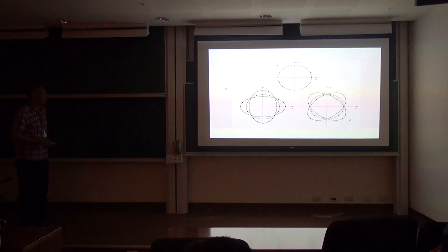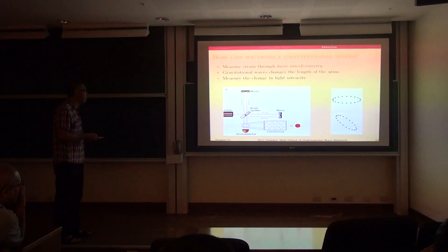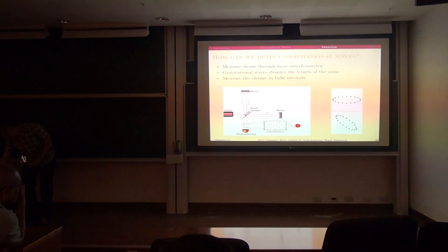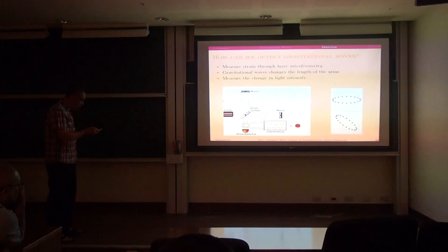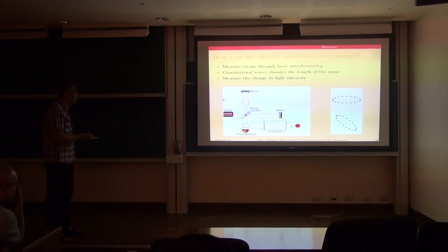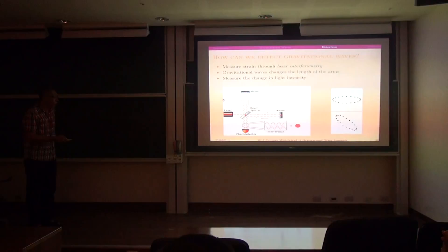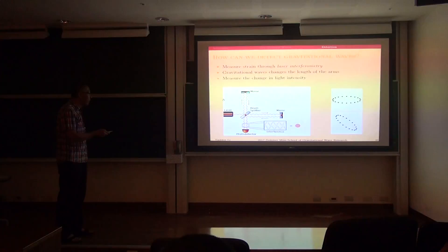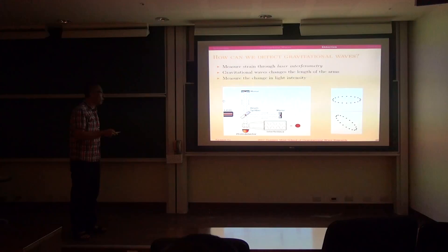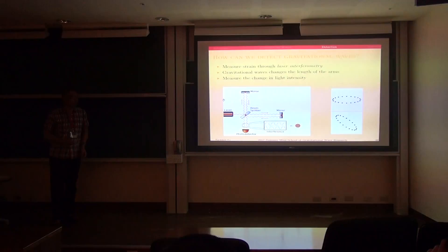The LIGO interferometer arms are 4 km long, and the target strain sensitivity is 10⁻²¹. This means measuring a displacement smaller than a proton. The laser wavelength is about 10⁻⁶ m (micron), giving a naive sensitivity of only ~10⁻⁹ — far from sufficient. To enhance this, photons are stored in a Fabry-Perot cavity bouncing more than 1000 times, effectively increasing the arm length by three orders of magnitude, reaching ~10⁻¹².